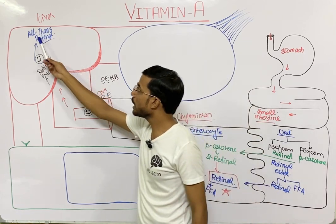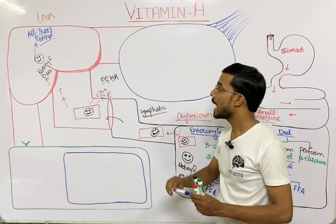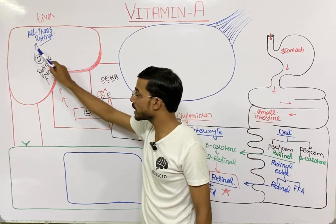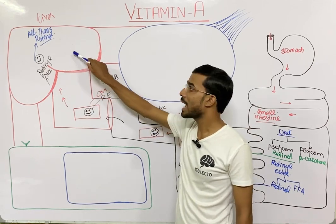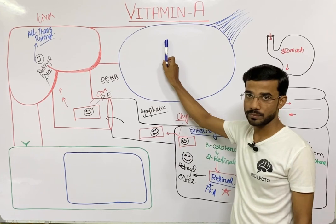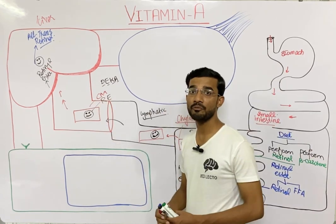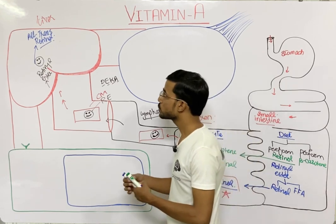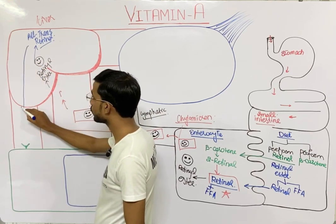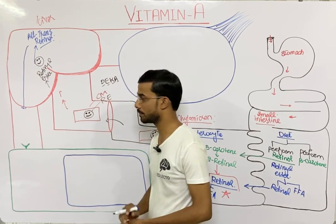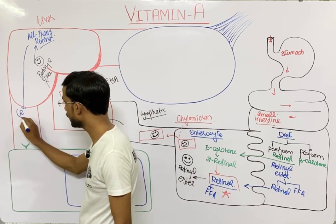All-trans retinol in the liver has three options: it can go towards the peripheral tissues of the body, it can be stored inside the liver, or it can go towards the eye. We will first discuss when it goes toward peripheral tissues — all-trans retinol enters the bloodstream.